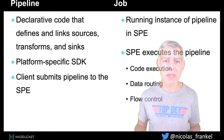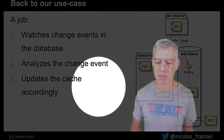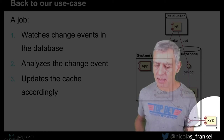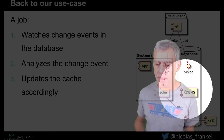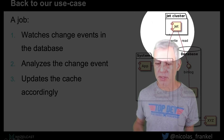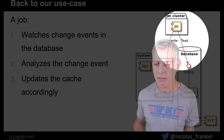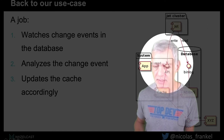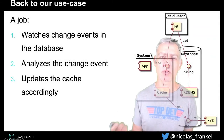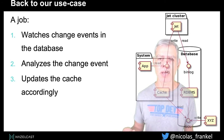Now we have all the pieces to resolve our issue. We have our application reading from the cache, our database with a batch changing reference data. We add a Hazelcast cluster that reads every time there is a change in the database, gets informed about the change, and writes it into the cache. So the application can always read from the cache knowing it is up-to-date — or very close to real-time up-to-date.